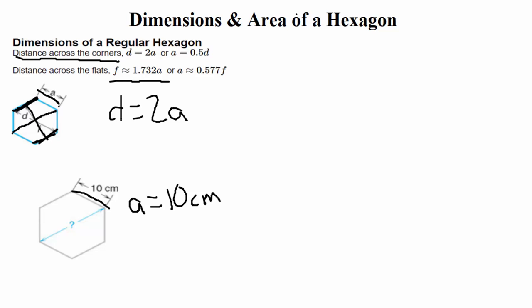First off, we need to pay attention. Is it asking us for the distance across the flats, or is it asking us for the distance across the corners? Taking a look at this one, this one goes from corner to corner, right? It's not the flat side. It's the corner to the corner. So therefore, we need the formula for distance across the corners. And that's the one that says D is equal to 2A.